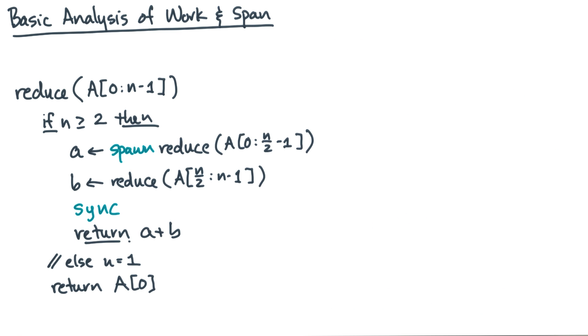So what about the parallel version? Remember, you want to analyze work and span. Now let's assume that each spawn and sync is a constant time operation. It turns out this is not a bad assumption in practice.